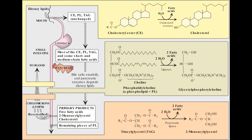Phospholipid degradation — pancreatic juice is rich in the proenzyme of phospholipase A2, which, like procolipase, is activated by trypsin, and like cholesterol ester hydrolase, requires bile salts for optimum activity. Phospholipase A2 removes one fatty acid from carbon-2 of a phospholipid, leaving a lysophospholipid. For example, phosphatidylcholine, the predominant phospholipid of digestion, becomes lysophosphatidylcholine. The remaining fatty acid at carbon-1 can be removed by lysophospholipase, leaving a glycerylphosphoryl base — for example, glycerylphosphorylcholine — that may be excreted in the feces, further degraded, or absorbed.